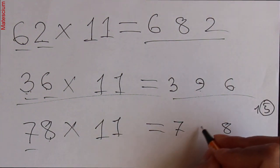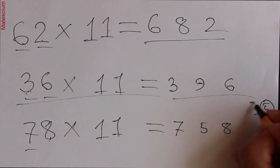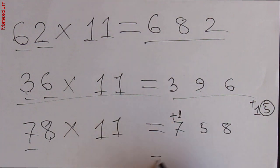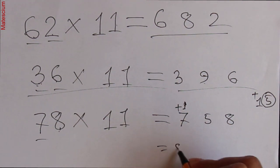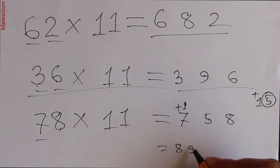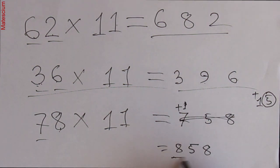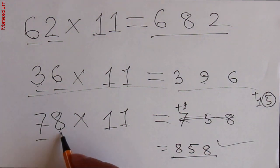Write the 5 here and carry the 1, which will be added to 7. That means 7 plus 1 is 8. So we have 8, 5, and 8. That means 858 is the answer for 78 times 11.